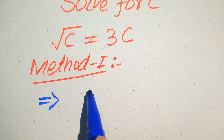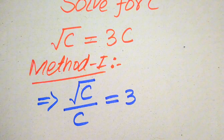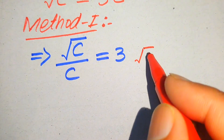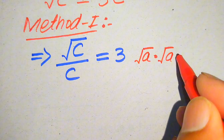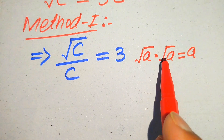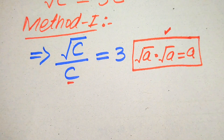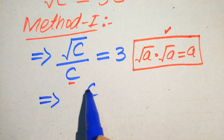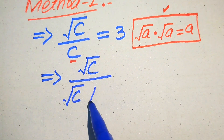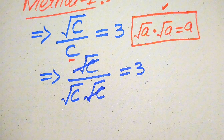When you divide both sides by c, it will be written as square root of c divided by c equals 3. We know that if square root of a multiplied by square root of a equals a — meaning when the radical term is multiplied by itself, the radical sign is removed. According to this rule, we write c in radical form: square root of c divided by square root of c times square root of c.